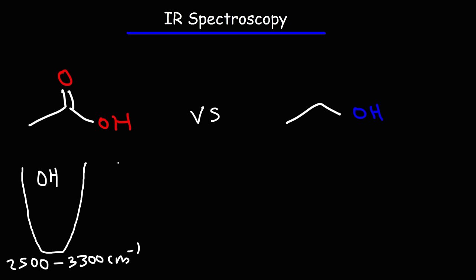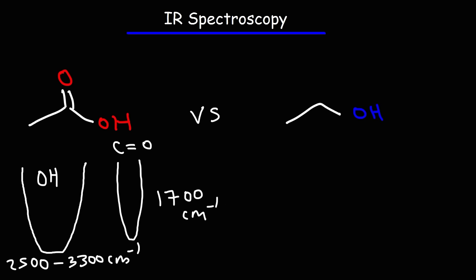The carboxylic acid also has a very strong CO stretch, and the CO stretch shows up at a signal of 1,700 wavenumbers. You may want to write these numbers down because you'll need them in order to identify these functional groups in IR spectrums.